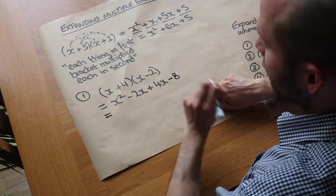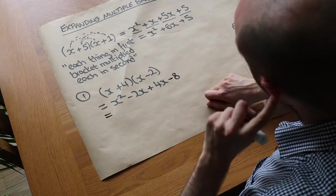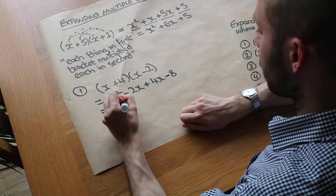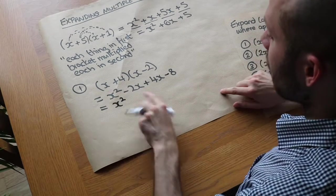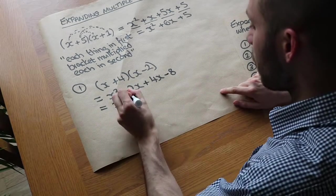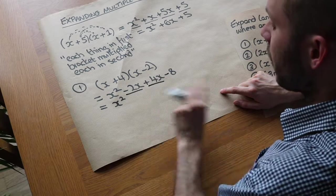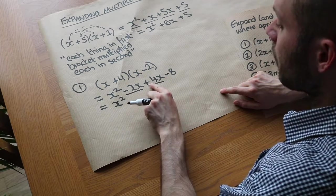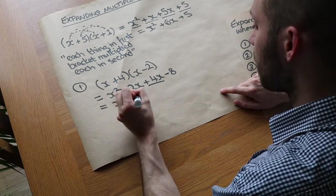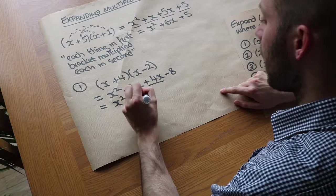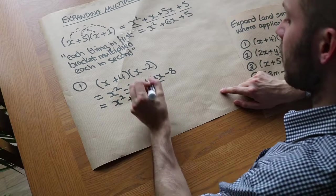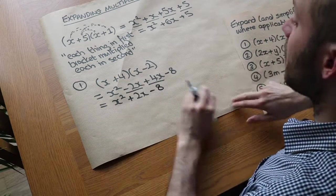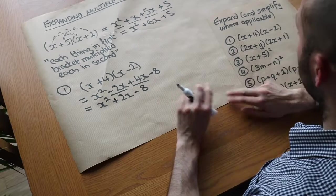Now let's collect like terms. The x squared doesn't collect with anything, so it's just x squared. The minus 2x collects with the plus 4x: minus 2 plus 4 is plus 2, so it's plus 2x. And then we've got minus 8. So the expanded and simplified expression is x squared plus 2x minus 8.